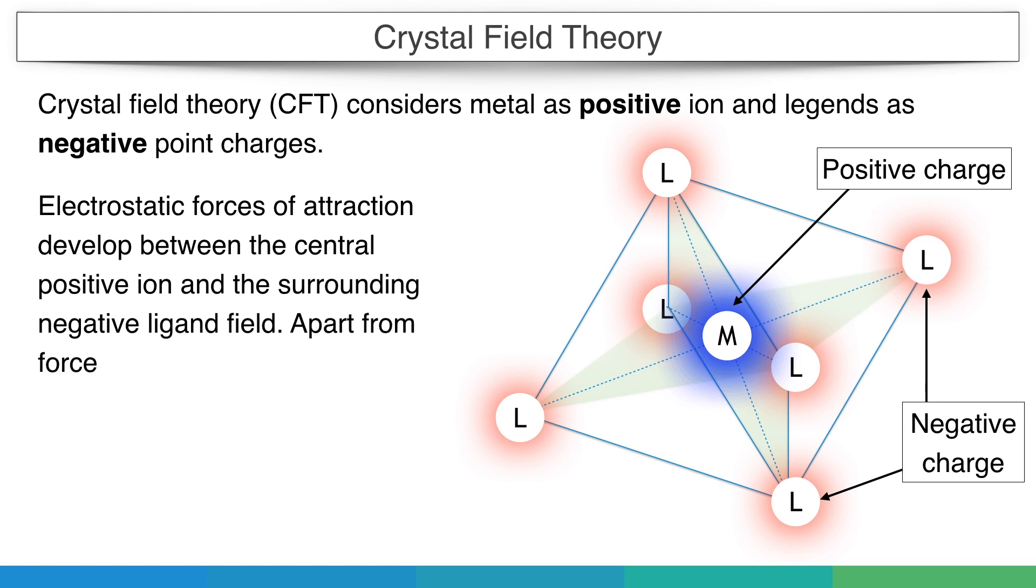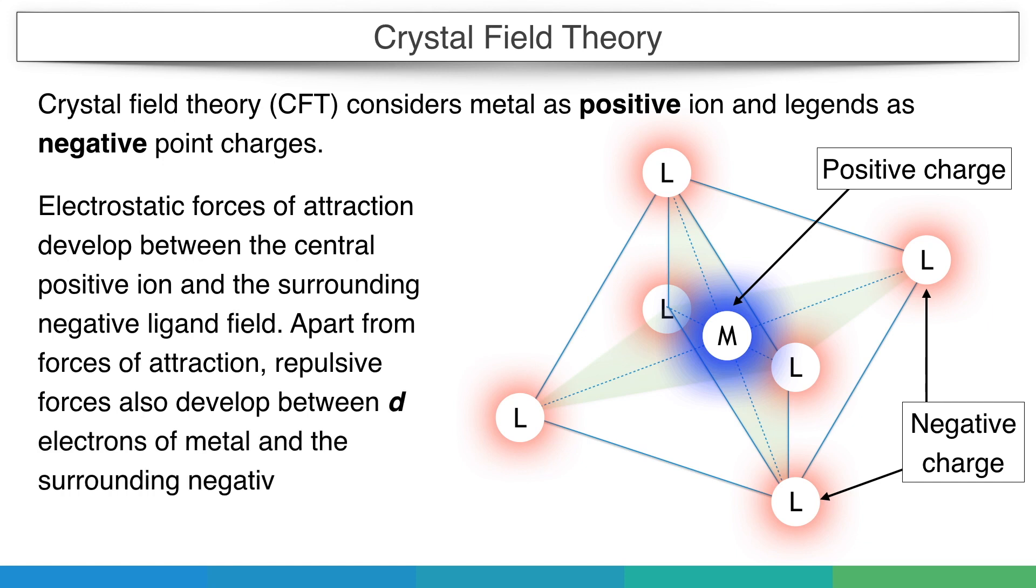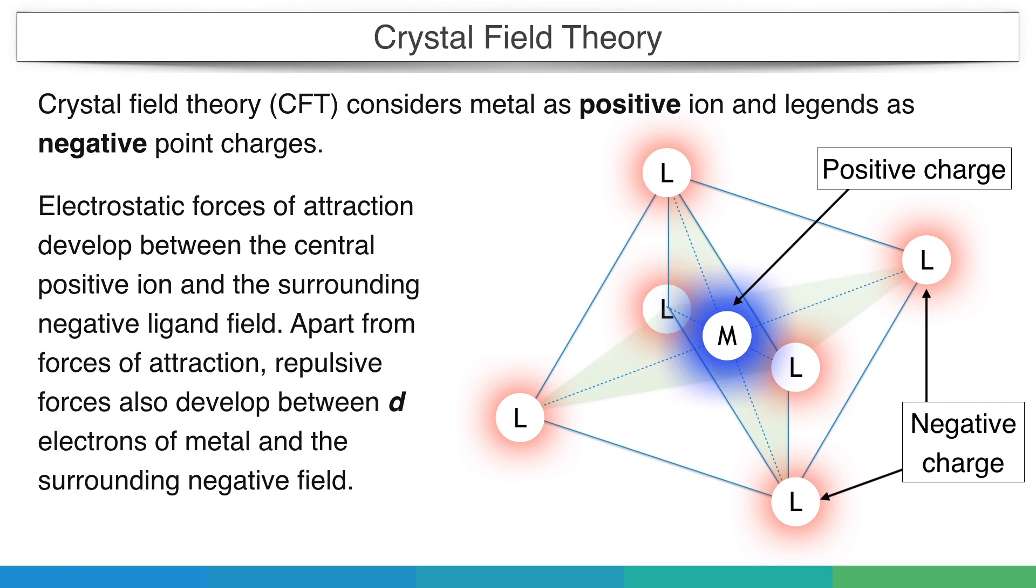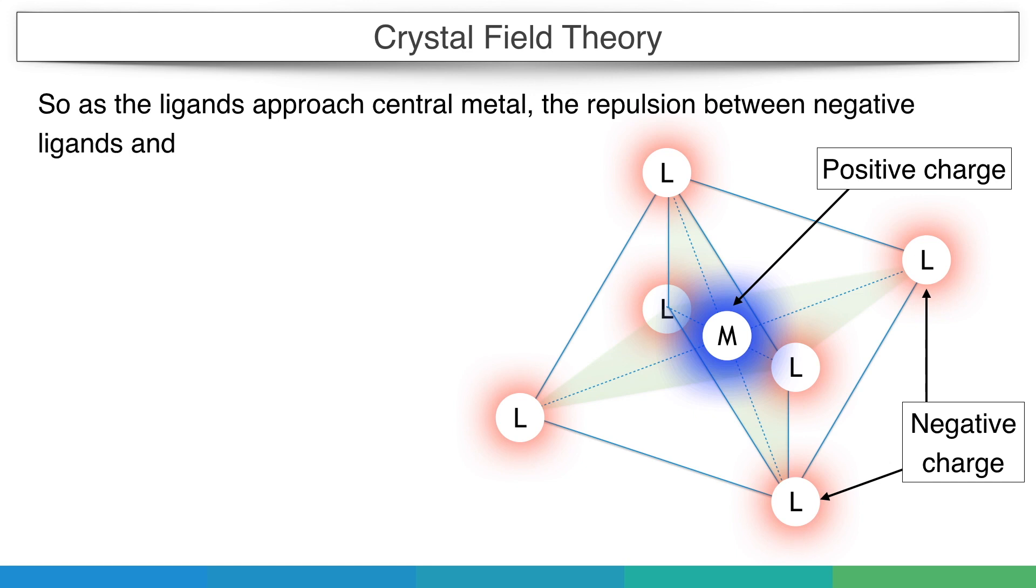Apart from forces of attraction, repulsive forces also develop between d electrons of the metal and the surrounding negative ligands. As the ligands approach the central metal, the repulsion between negative ligands and electrons of the d orbitals increases.